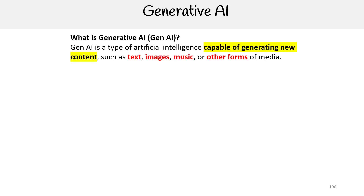Generative AI, which can also be shortened to gen AI, is a type of artificial intelligence capable of generating new content such as text, images, music, or other forms of media.